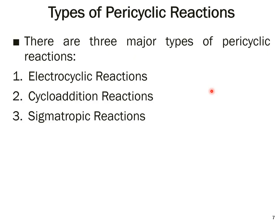There are three major types of pericyclic reactions. The first is electrocyclic reactions, the second is cycloaddition reactions, and the third is sigmatropic reactions, which may also be called sigmatropic rearrangements.